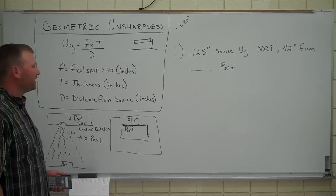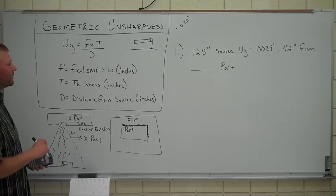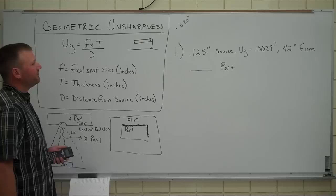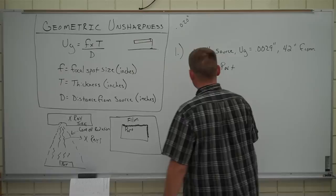Just working number one here, you'll see that on your overall worksheet. Just working number one, right there is the equation, or the question. It says .125 inch source, we have already given a geometric unsharpness value of .0029, almost three thousandths of an inch, and it's 42 inches from whatever thickness part. So let's kind of just draw that out here.